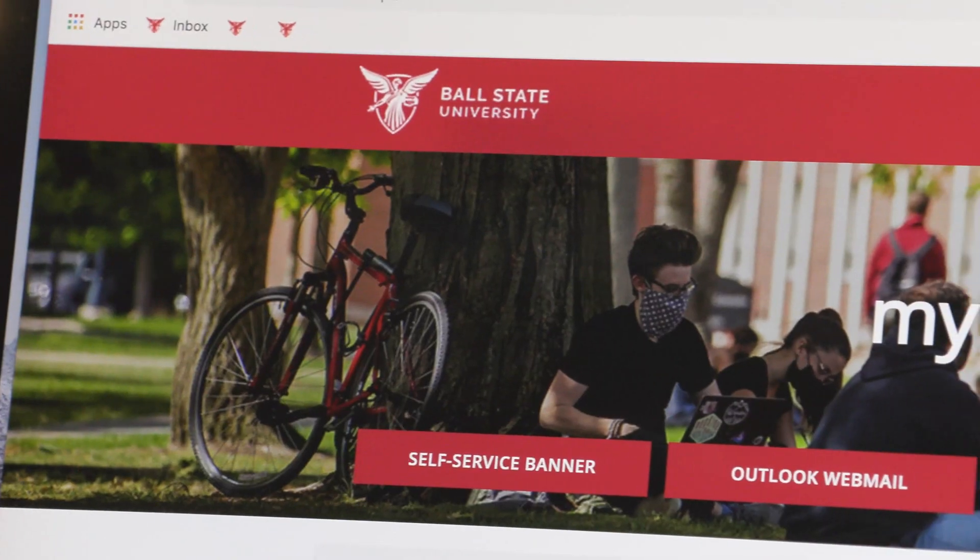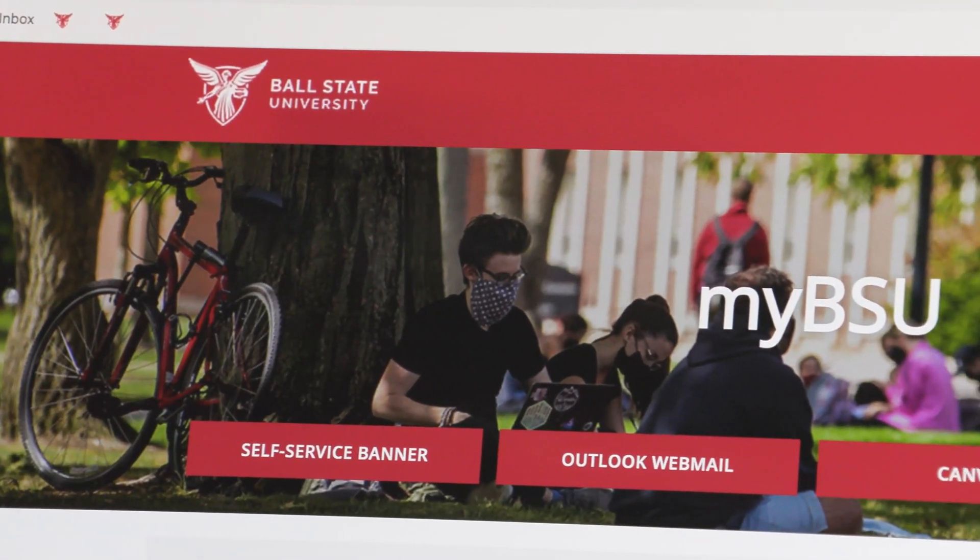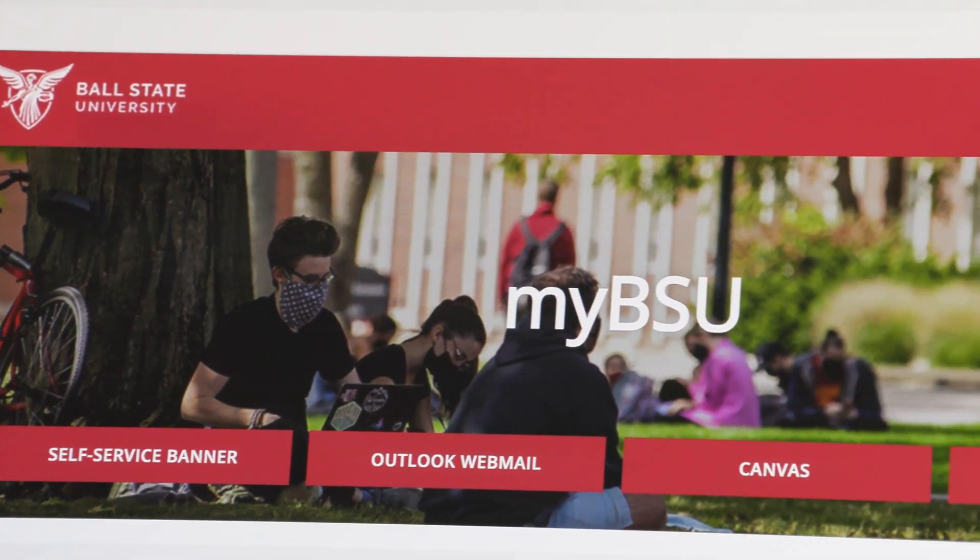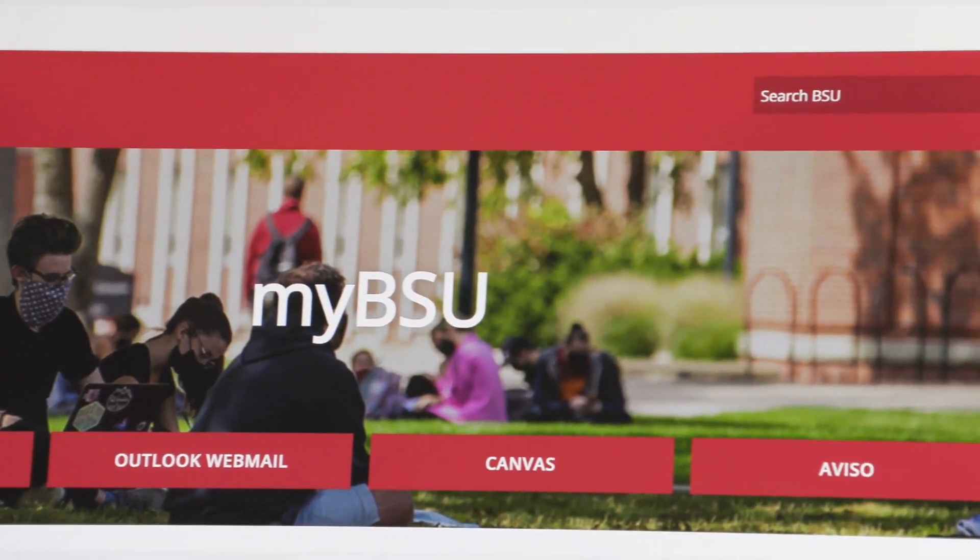You'll gain access to your MyBSU account once you're officially admitted to the university and set up your username and password. There are a couple links that are pretty important for you to know, so we're going to go over those today. Those are going to be your Self-Service Banner and Outlook webmail. Before we click on these links together, let's tell you how to get into MyBSU. To access this page, you're going to visit my.bsu.edu and you're going to log in with your Ball State credentials, otherwise known as that BSU username and password.